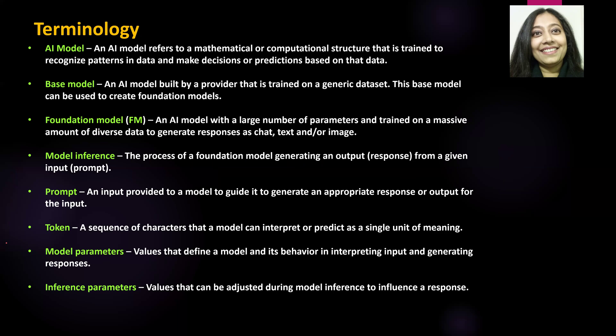The first terminology is an AI model. What is an AI model? An AI model essentially refers to a mathematical or computational structure that is trained to recognize patterns in data and make decisions or predictions based on that data. It's a logical, complex mathematical structure trained on data that uses its logic to make decisions or predictions based on the data it has been provided with.